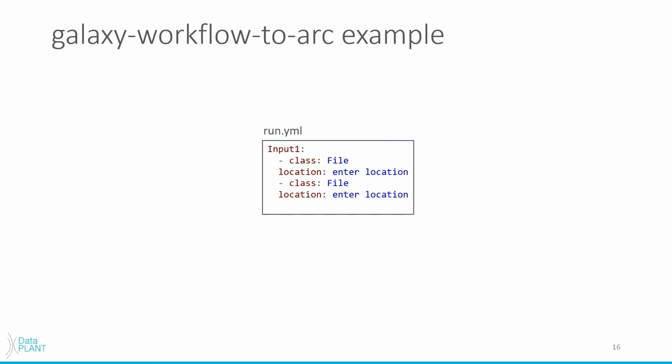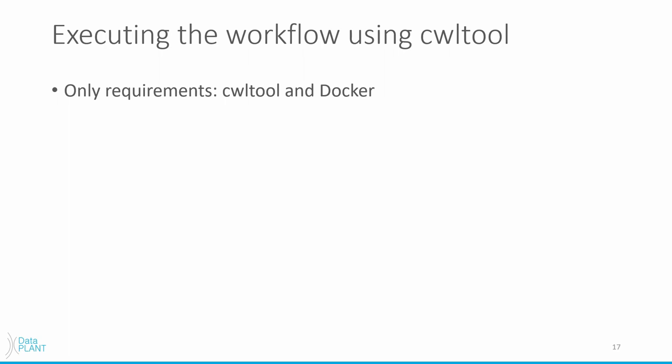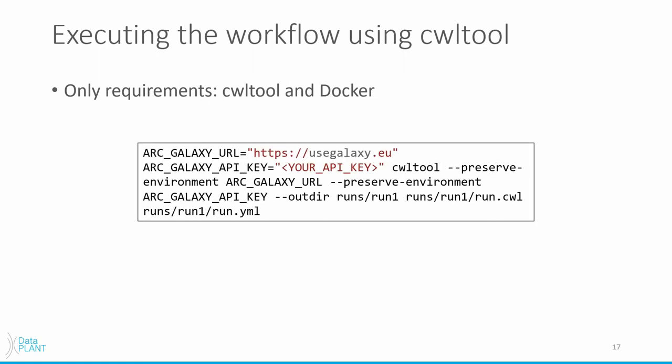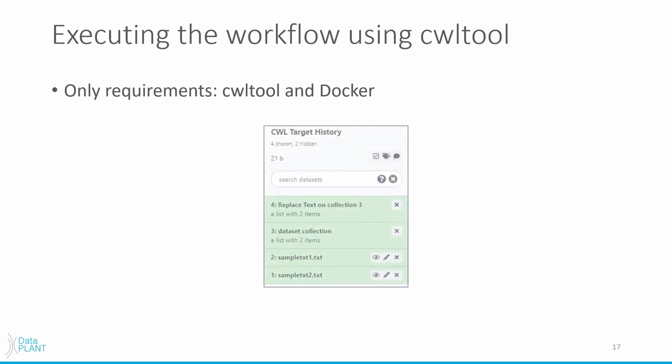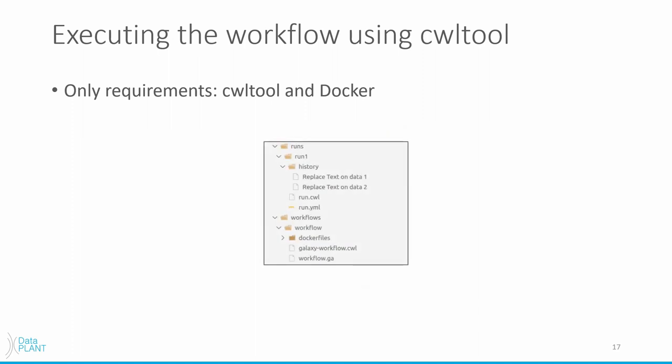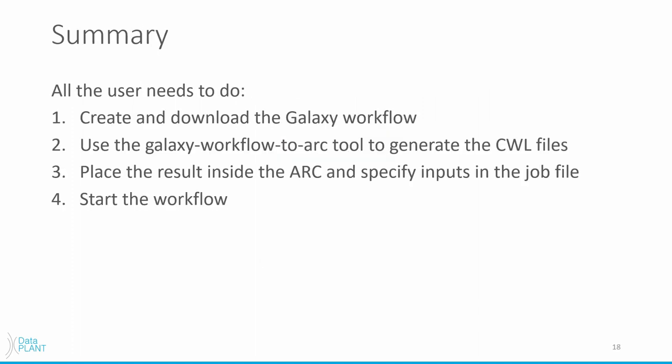So how would we execute this? In order to execute the generated ARC, all the user has to have installed is cwltool and docker. After that, all we have to do is execute this command right here, replacing the value of ArcGalaxy API key with our personal key. The workflow will then start and we can observe this on usegalaxy.eu by looking at our histories. When Galaxy is done, we can see the results appear inside of our run folder. To summarize, we are left with a four-step process to run a Galaxy workflow inside of an ARC: create and download the Galaxy workflow, use our tool to generate the necessary CWL files, place the result inside the ARC and specify the inputs in the job file, and start the workflow.